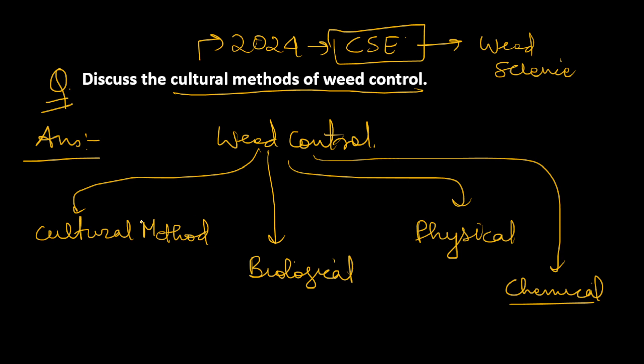We will discuss cultural method now, but you should also know what biological methods are - that is use of some living organisms, other predators, or parasites to control them or to compete with them to reduce their population. For physical methods, you can use physical elements. For chemical, we can use different chemicals which are known as herbicides or weedicides.